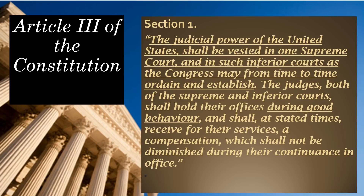Article I sets up the legislative branch, Article II sets up the executive branch, and Article III sets up the judicial branch — much shorter than the others. Article III begins: 'The judicial power of the United States shall be vested in one Supreme Court and in such inferior courts as the Congress may from time to time ordain and establish.' The framers left a lot of the details to Congress to figure out later.